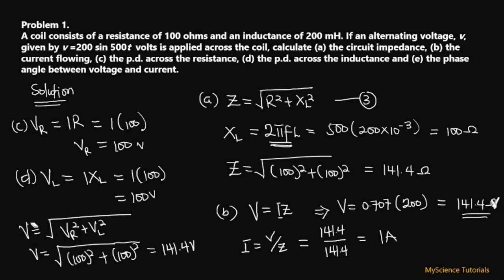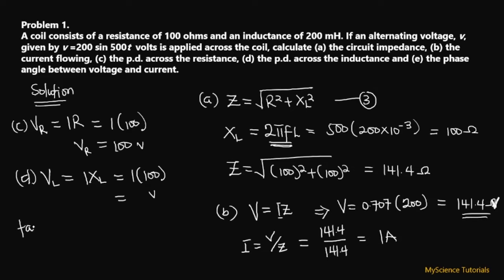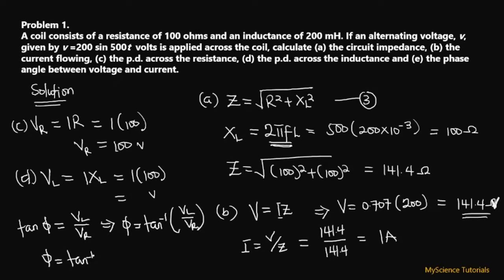For part (e), to find the phase angle between the voltage and current, the formula is: tan(φ) = VL / VR. Making the phase angle the subject: φ = tan⁻¹(VL / VR) = tan⁻¹(100 / 100) = tan⁻¹(1) = 45 degrees. So the phase angle between the voltage and the current is 45 degrees.